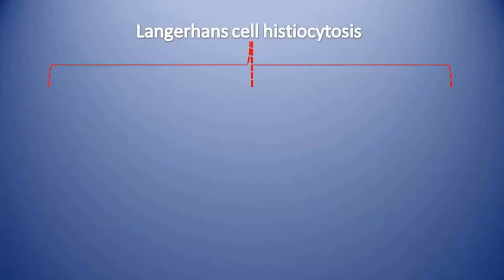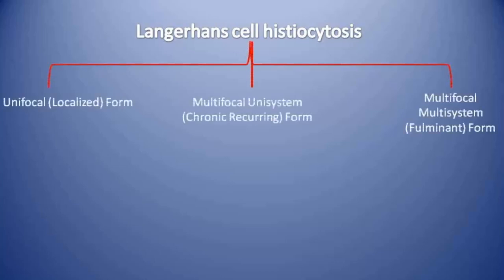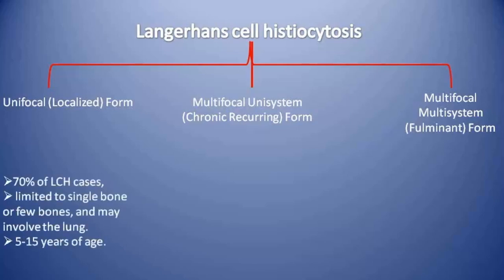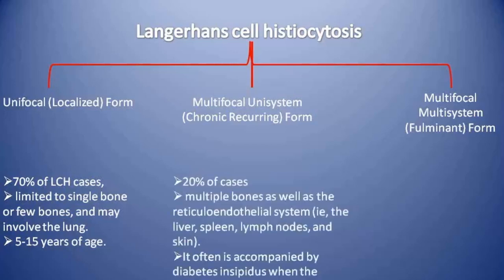Langerhans cell histiocytosis can be divided into three categories. First is the unifocal or localized form, which comprises 70% of LCH cases. It is limited to a single bone or few bones and may involve the lung. It affects patients 5 to 15 years of age. Second is the multifocal unisystem form, which comprises 20% of cases and affects multiple bones as well as the reticuloendothelial system including liver, spleen, lymph nodes, and skin.